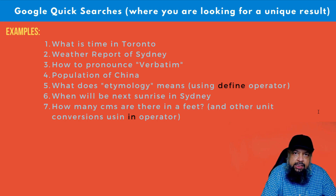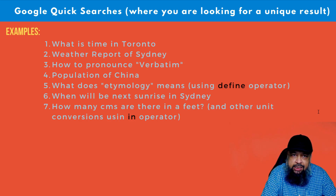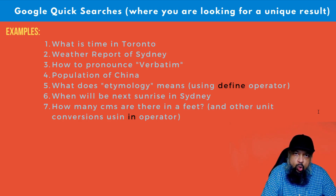If you want to get the pronunciation of a particular word, I used to go to a dictionary, type the word, then click the speaker button to get the pronunciation. But now I found that you just type 'pronounce' and then the word, and Google will show you the pronunciation. Similarly for population, you can find the population of a country or city. If you want to find the definition of a word, you can use the operator 'define:' and then the word.